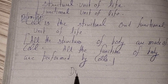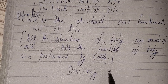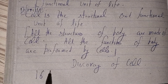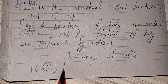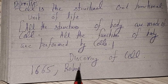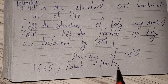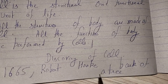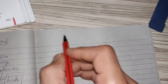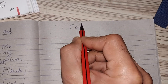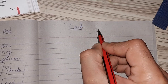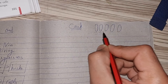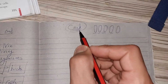Next topic is the discovery of cell. How was the cell discovered? In 1665, a person named Robert Hooke took the bark of a tree. Bark means the outer covering. In the bark, there is a structure called cork. He took thin slices of this cork and placed them under a microscope.